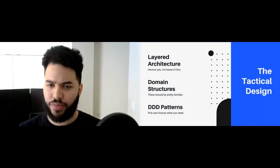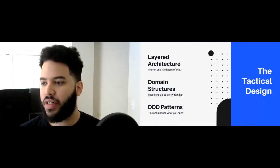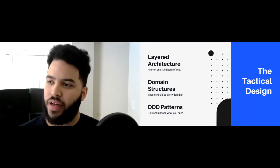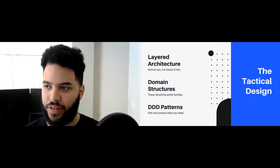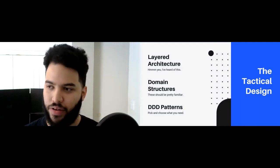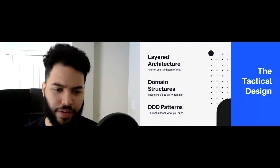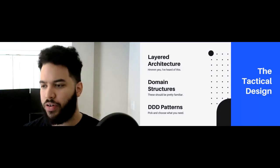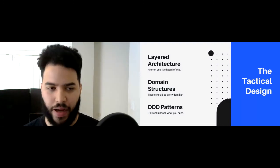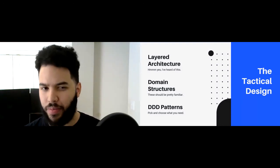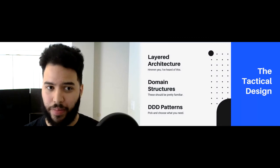There are three main aspects of tactical design — this is breadth-first. The first is layered architecture. If you've heard of onion architecture or hexagonal architecture, this is very much the same vein — nothing new, it's been around a while. You have your domain structures and DDD patterns. DDD patterns are what I'll talk a bit more about because there are some caveats and cautionary tales, but it's incredibly powerful.